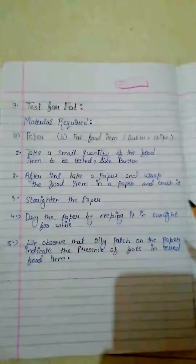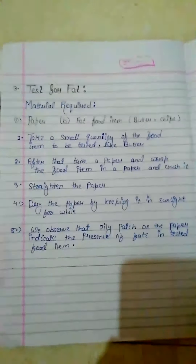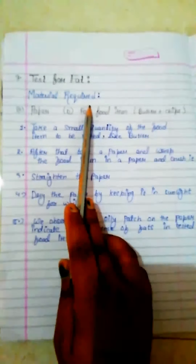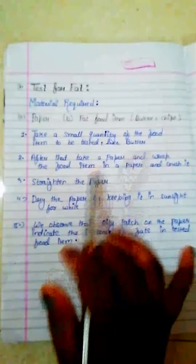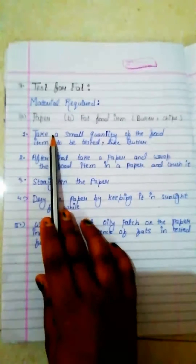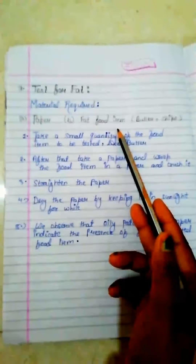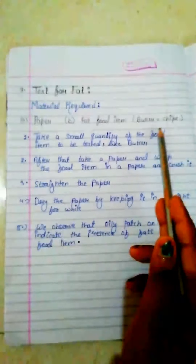Now let's learn about the test for fat. Fat also gives energy. The materials needed are very simple — only paper and food items that contain fat, such as butter, chips, oil, and cheese.